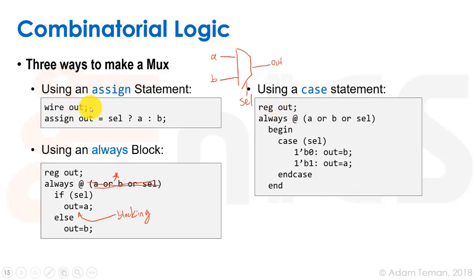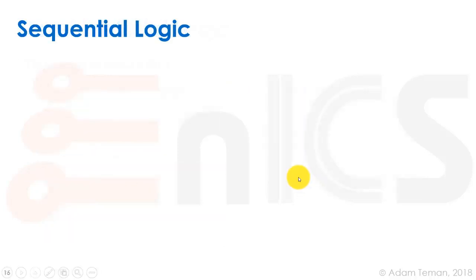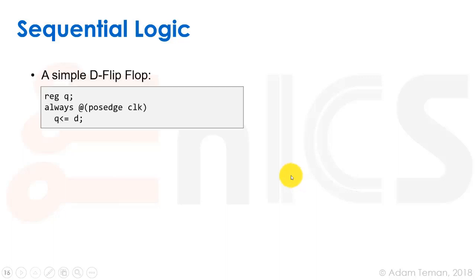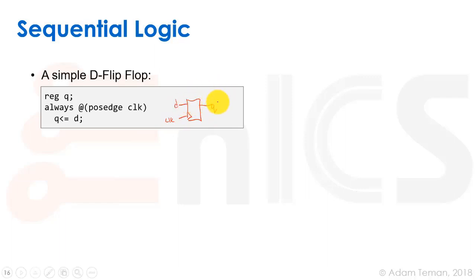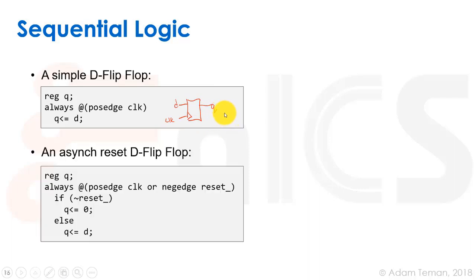Now let's look at sequential logic. For a simple D flip-flop, we declare the output Q as a reg and write 'always @(posedge clk) Q <= D;' using a non-blocking assignment. This infers a flip-flop with a clock input, D input, and Q output — no reset, no enable.